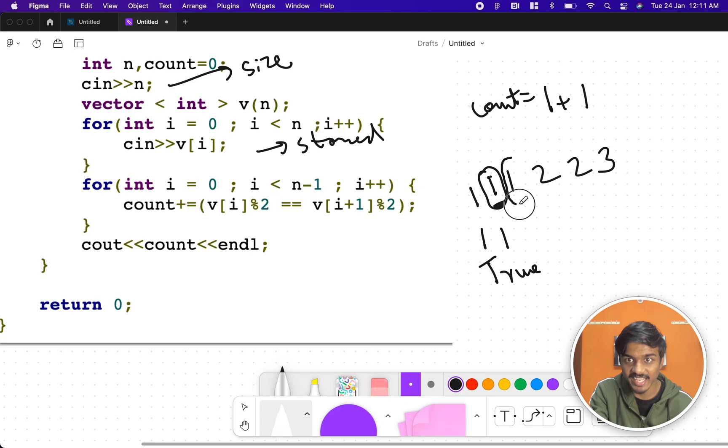Now i becomes 3, the second index 0, 1, 2. It compares with v[i] mod 2, which is 1 equal to v[i+1] mod 2. This is 0. So 1 is not equal to 0, right? So this condition is false. Count plus equal to 0. So you see here, right? One pattern. 1, 2, 3. Three odd numbers are there. We got the result as 2.